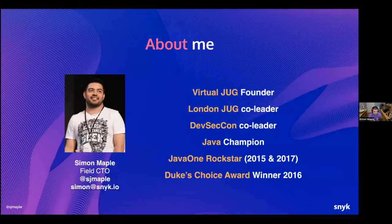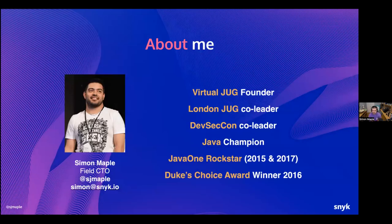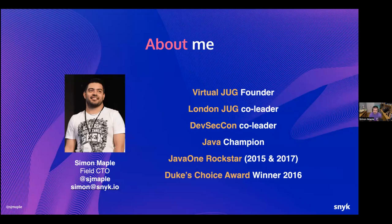My name is Simon Maple. Just as a bit of background, my background is very heavily in the engineering space. I've been in engineering teams, dev rel teams, development teams for just over 20 years. I've been at Snyk for just over four years, and my role has varied from leading the dev rel and community team to now the field CTO. I work with a lot of customers and prospects, helping them be successful with their security programs.